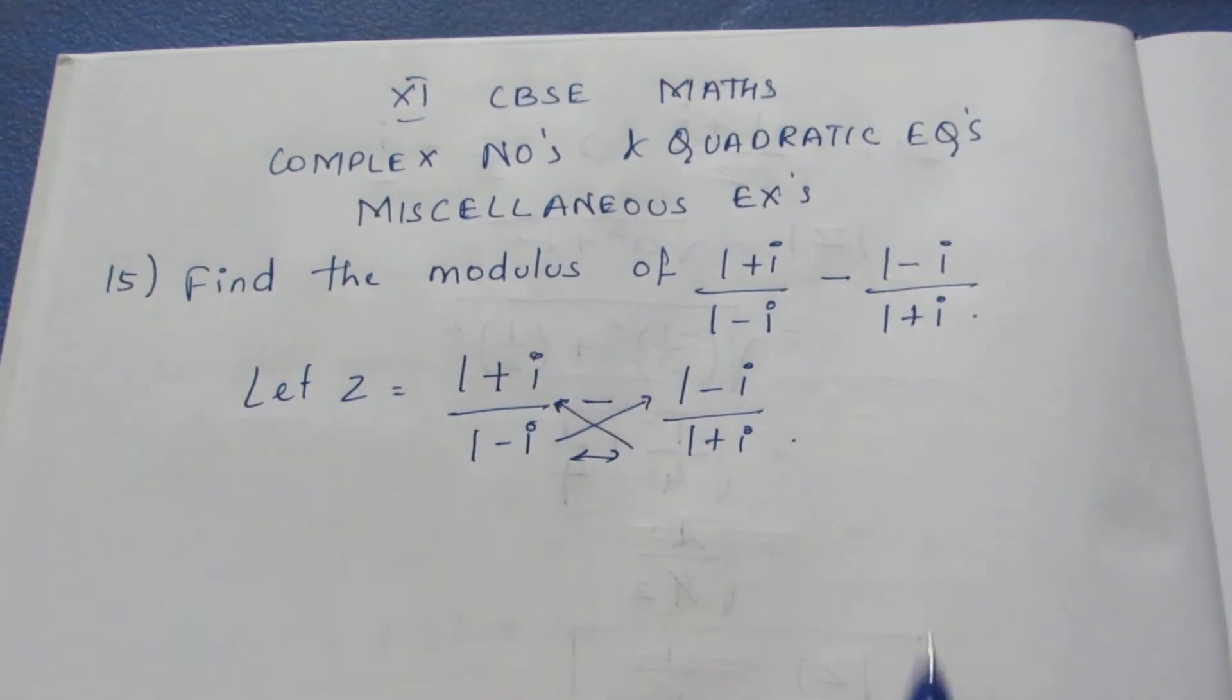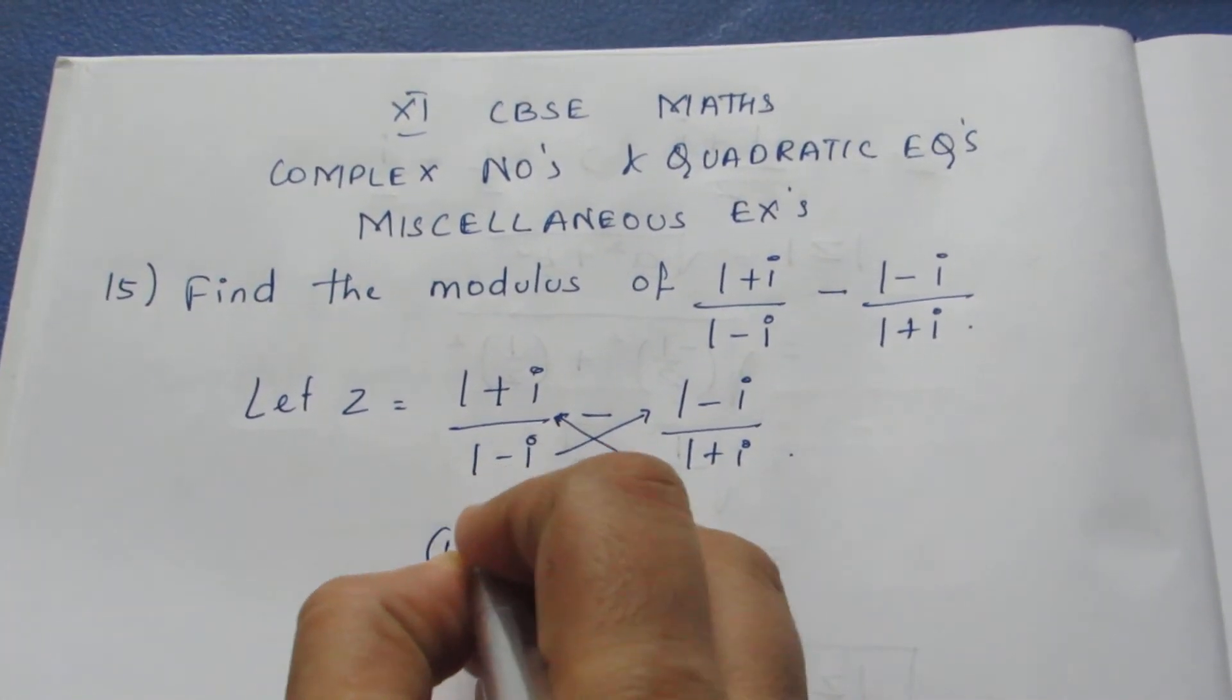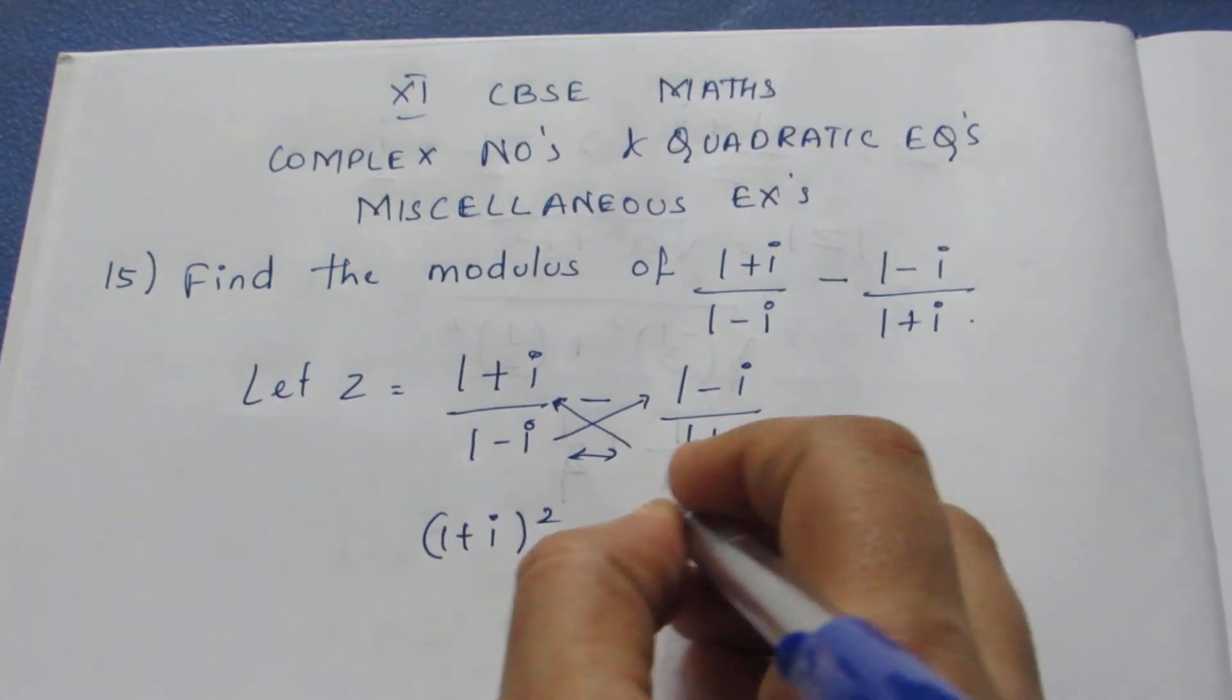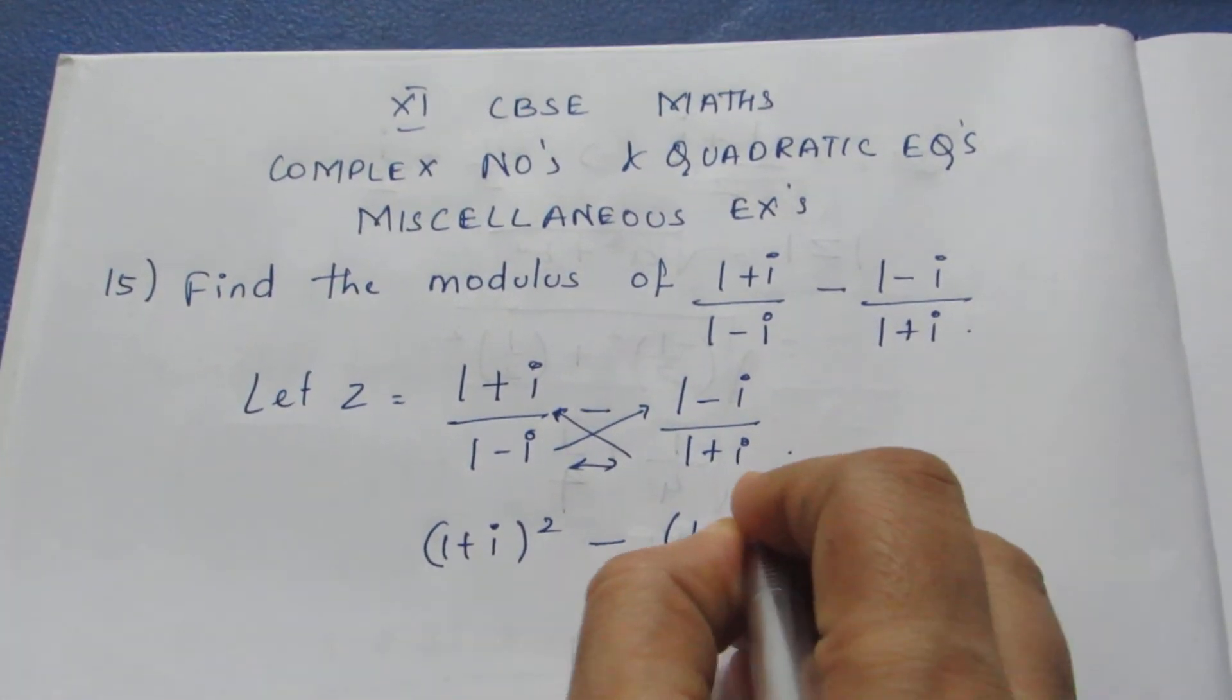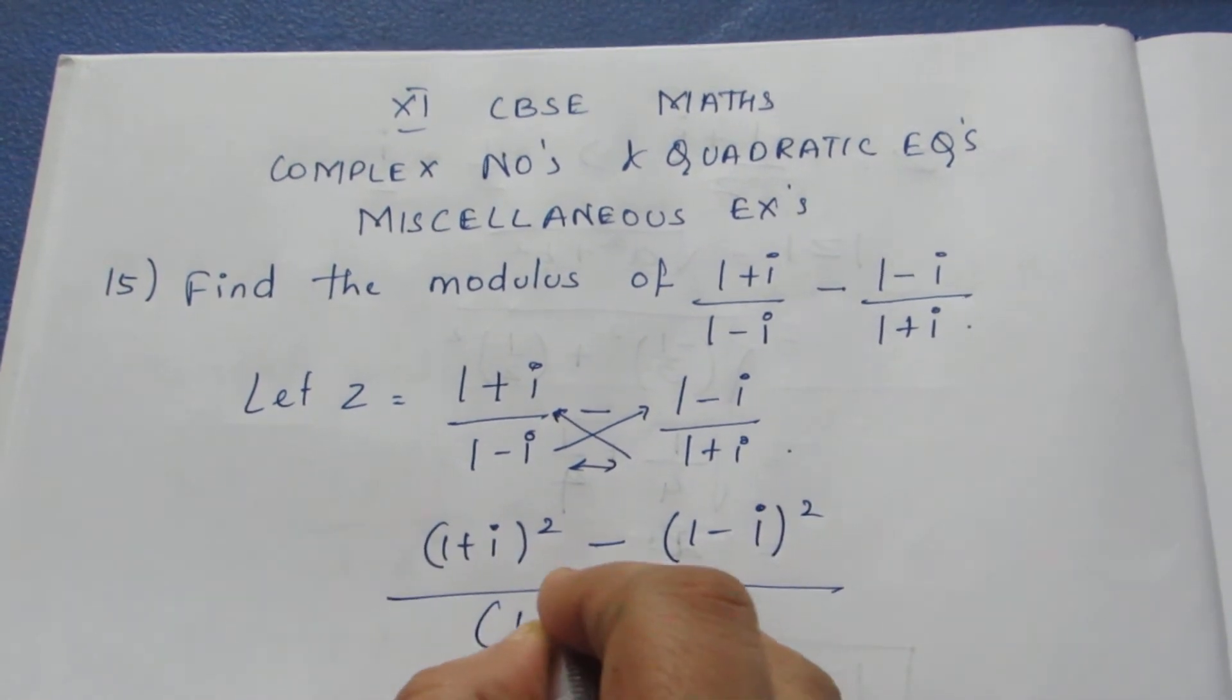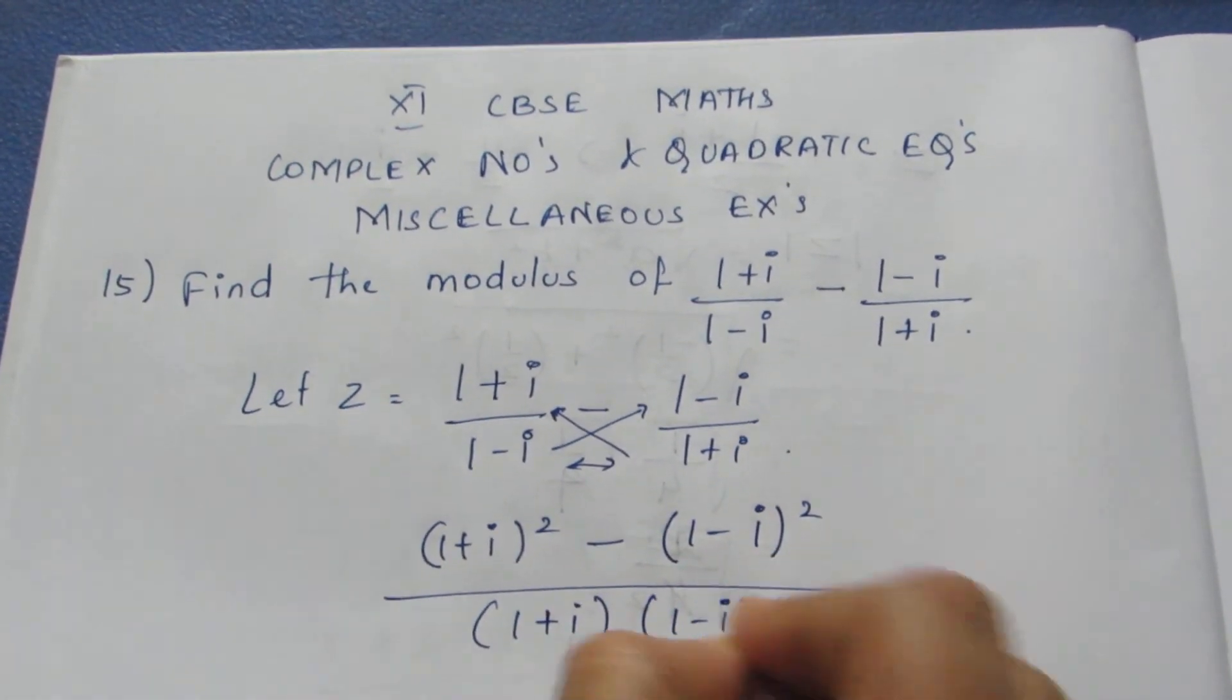If I multiply these two, I know that these are the same number, so I can write this to be (1 + i) squared. Similarly, minus here is also the same number squared. The denominator is (1 + i)(1 - i).